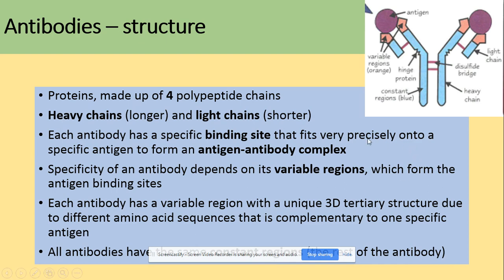The evidence for this is that it's made of four polypeptide chains, as you can see on the diagram here. We've got two heavy chains — those are the long ones — and we've got two light chains, which are our shorter chains.